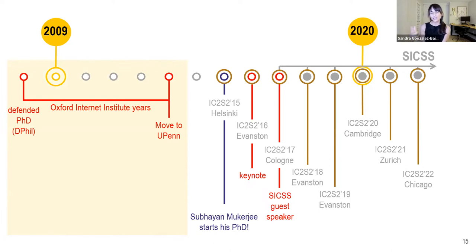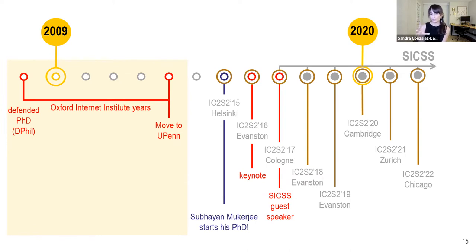Time flies — before you realize it, you'll be talking about your own grad students. Looking back, I would say the first five years of my career after finishing my PhD were the most important ones. I was lucky to receive institutional support for research that wasn't common back then. But this is true for everybody: the first five years of your careers will be the most important in defining the intellectual roots and questions that will guide much of the work that follows.